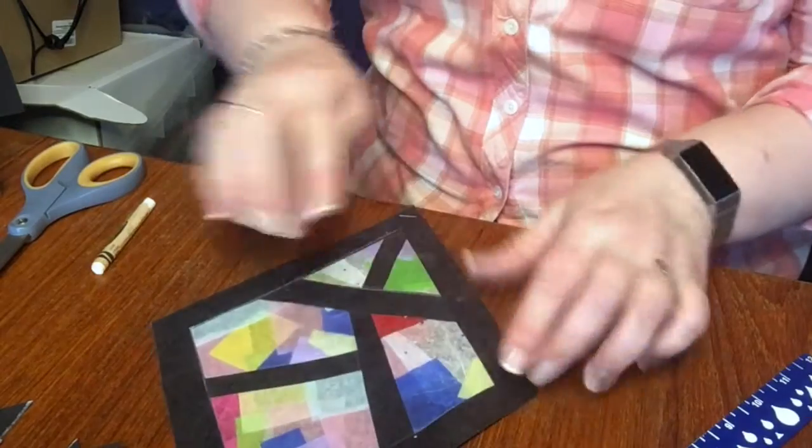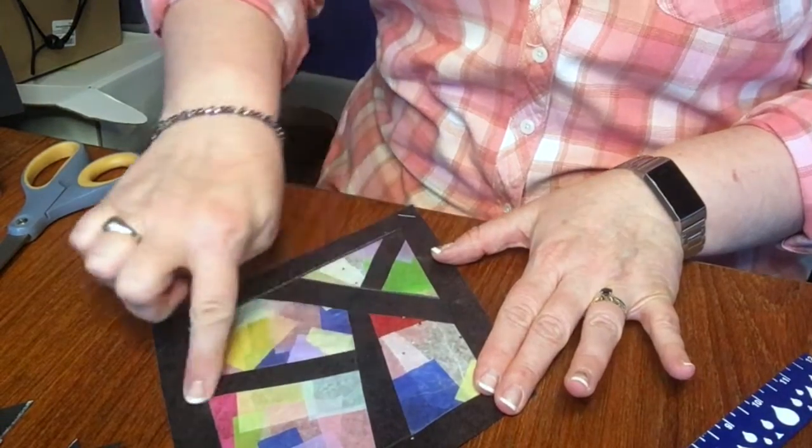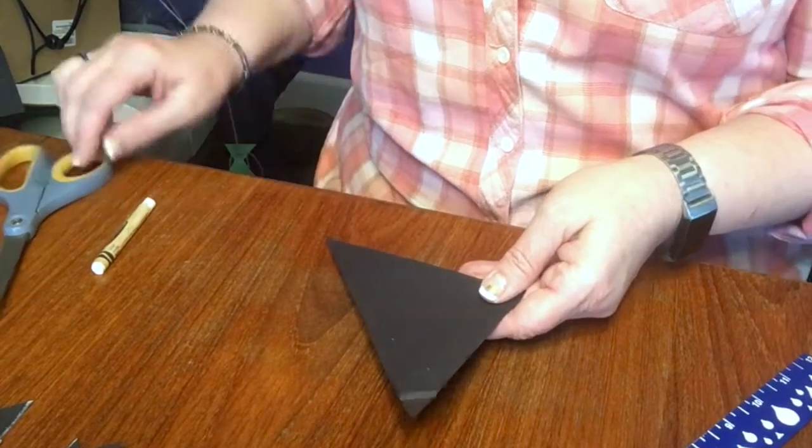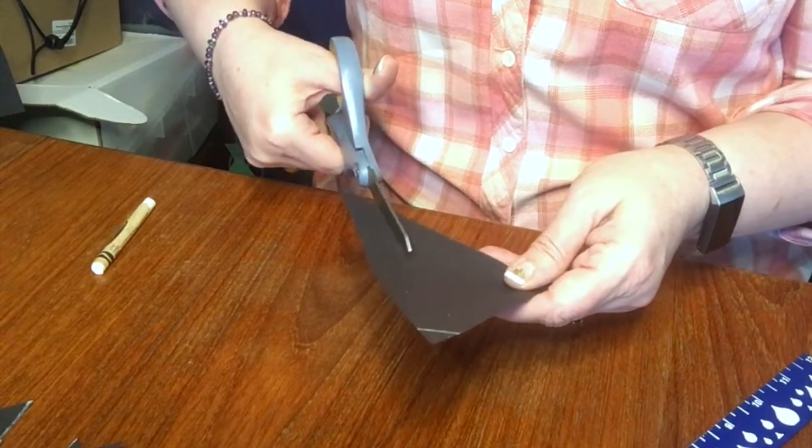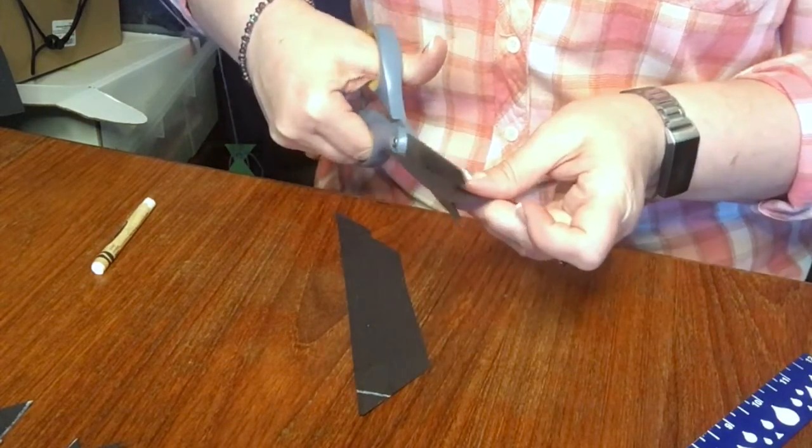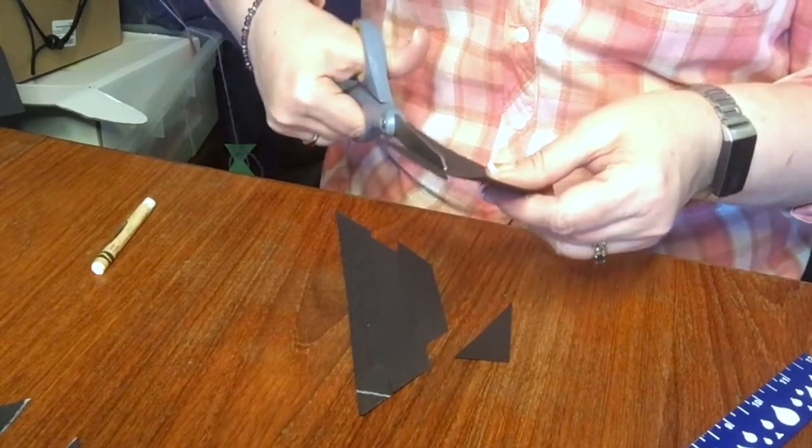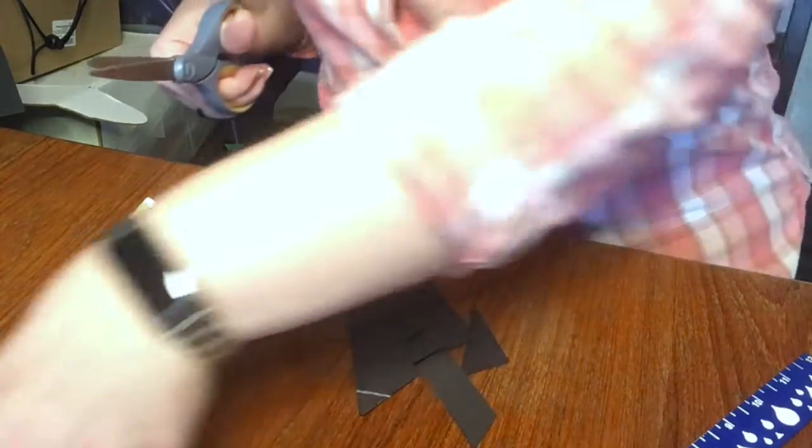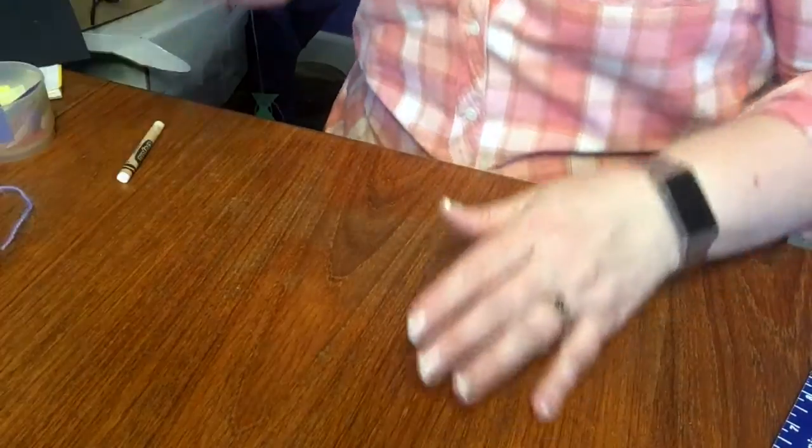I'm going to set that aside because now we need to make these lines that cut our mosaic into pieces. So I'm going to take these scraps and we're done being super precise now. We're just going to kind of eyeball it and cut some strips. You probably won't need to cut up all the scrap triangles.